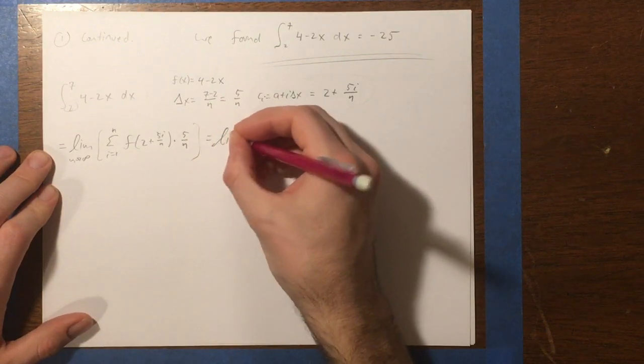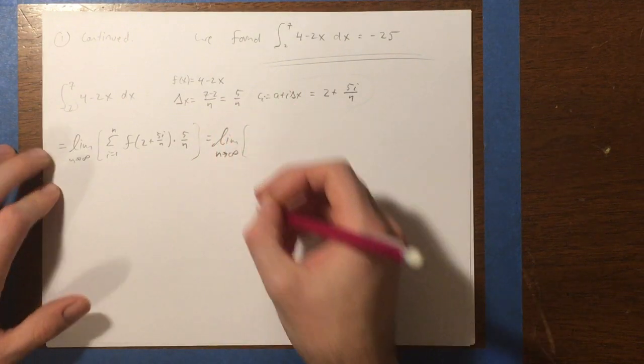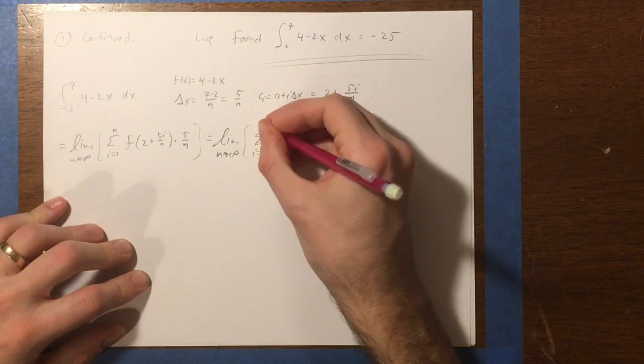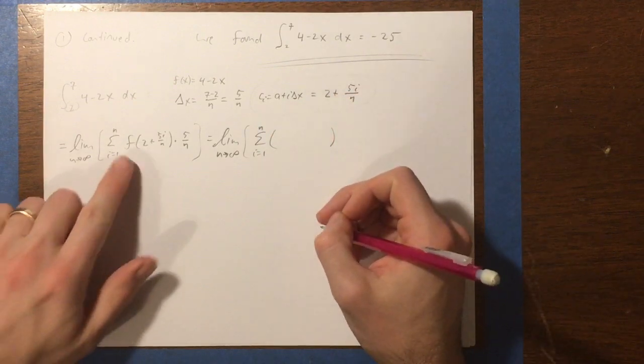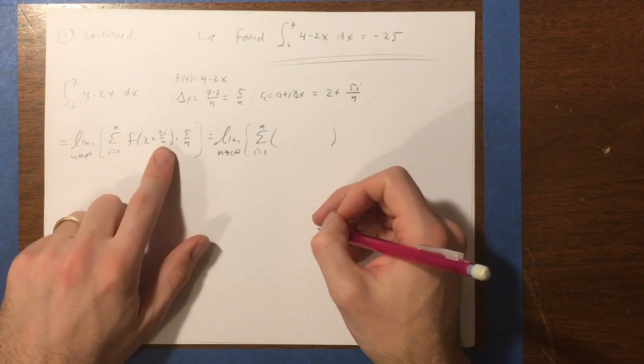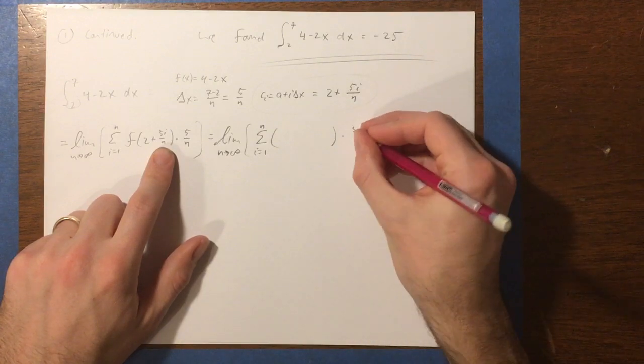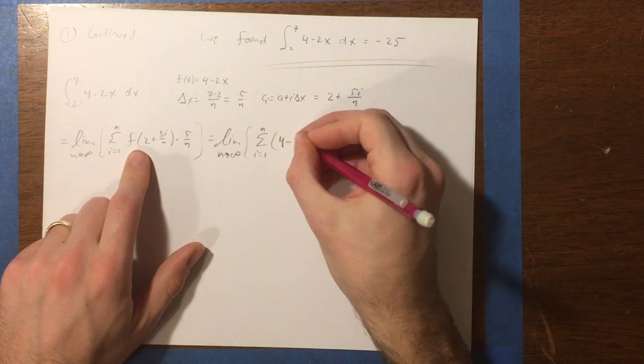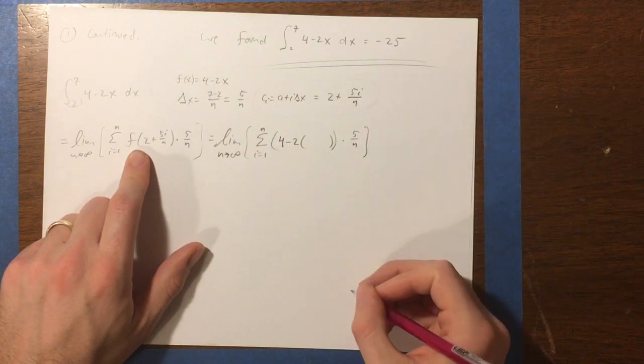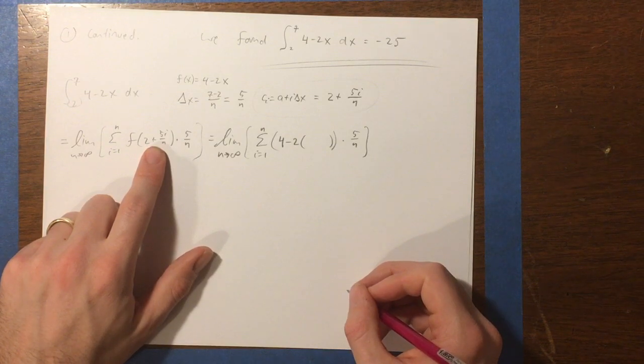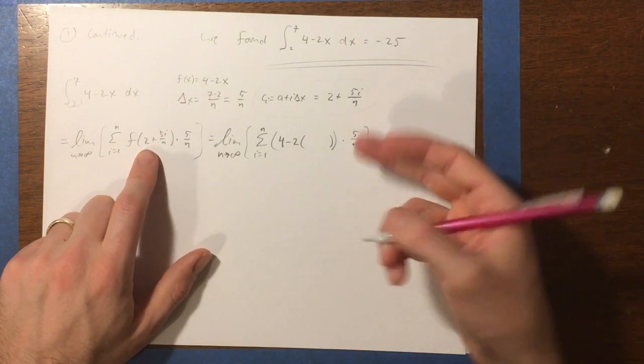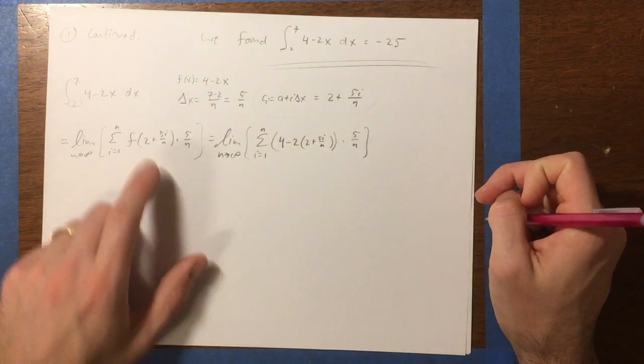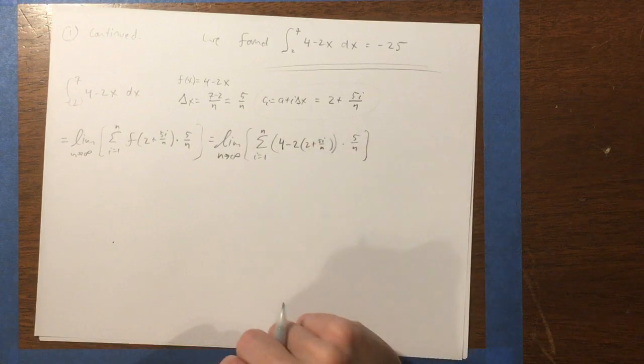Now, I'm going to actually apply the function that we're working with here. This linear function, 4 minus 2x. So we have i equals 1 to n. In place of where this f of x was, I'm going to put 4 minus 2x. And then that's still going to be times 5 over n. So inside here, we're going to have 4 minus 2 times x. And what was x? x is the sample point, ci. Which, using the formula for right-hand endpoints, is 2 plus 5i over n. Like that. So there we go. So that is applying the function.